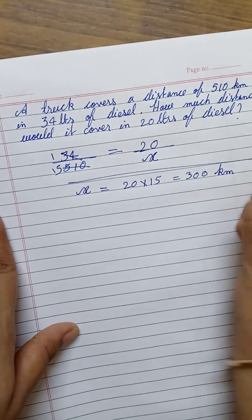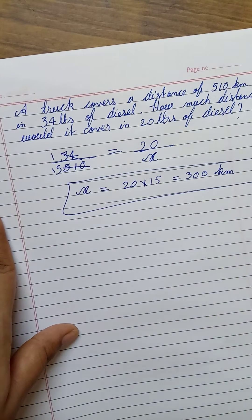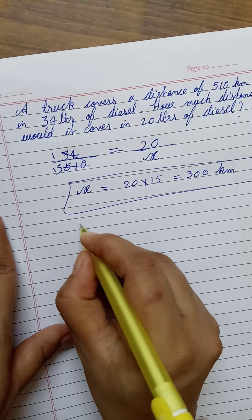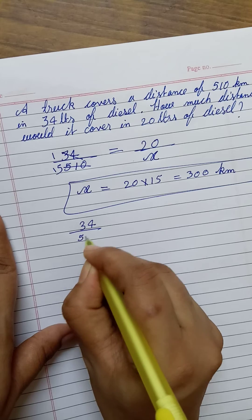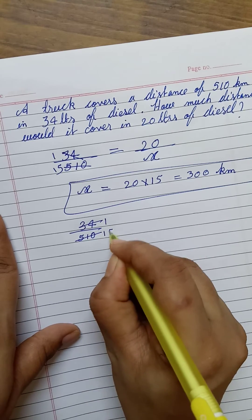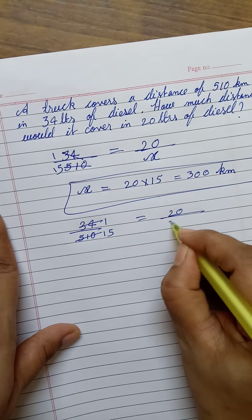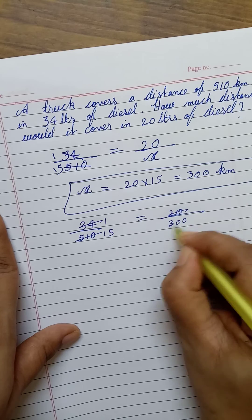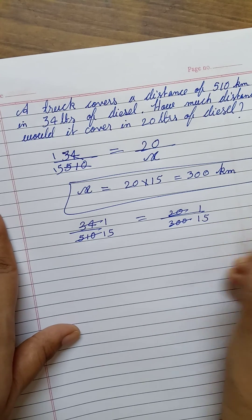For 20 liters of diesel, the distance traveled is 300 kilometers. So simple and so easy. Let's verify: for 34 liters of diesel, the distance traveled is 510 kilometers, so this is in the ratio 1 is to 15. And for 20 liters of diesel, the distance traveled is 300 kilometers, this is also in the ratio 1 is to 15. So they are equal.